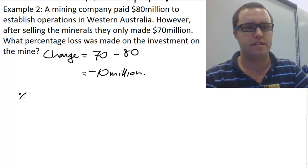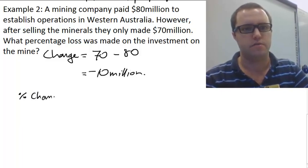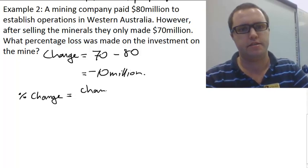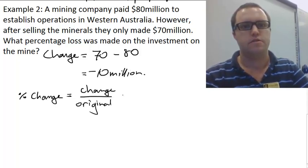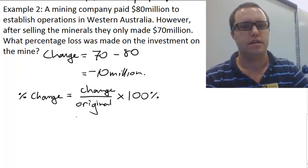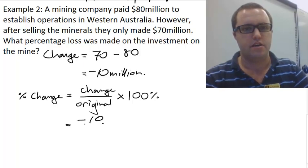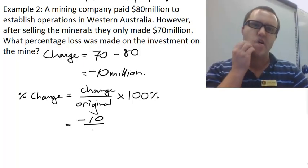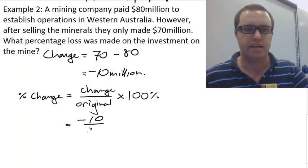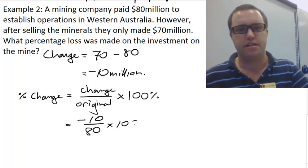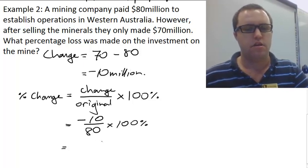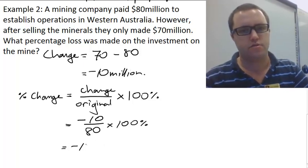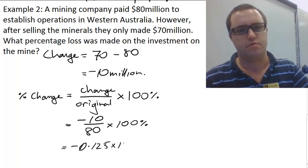So the percentage change is equal to the change amount over the original times by 100%, and so that gets us negative 10 over 80 times 100%, which gets us negative 0.125 times 100%.